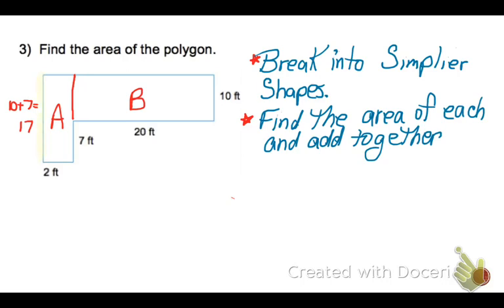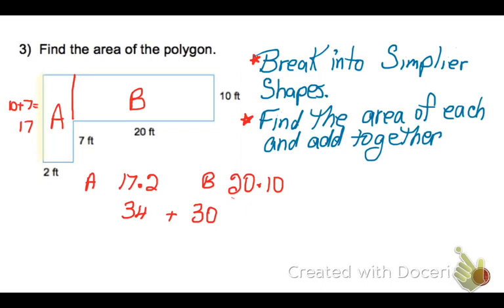Okay, so I'm going to find the area of rectangle A by saying 17 times 2, and then I know I have to add that to the area of rectangle B, and the area of rectangle B is 20 times 10, length of 20, 10 is my width, and I get that it is 34, and I add the 34 and the 200 together, and I get that this composite polygon has an area of 234 feet squared.